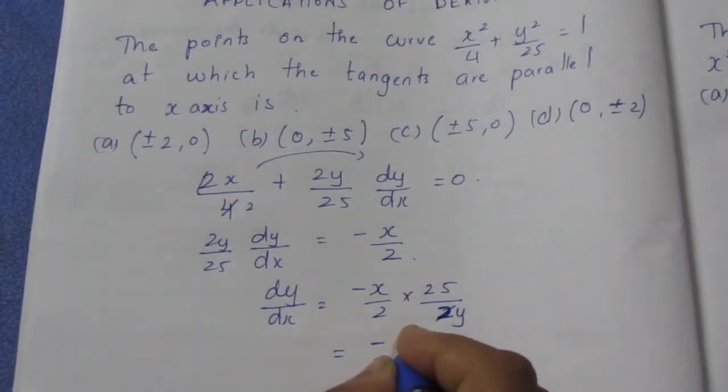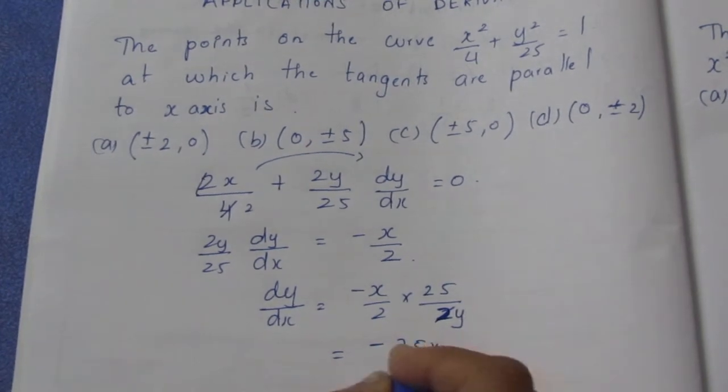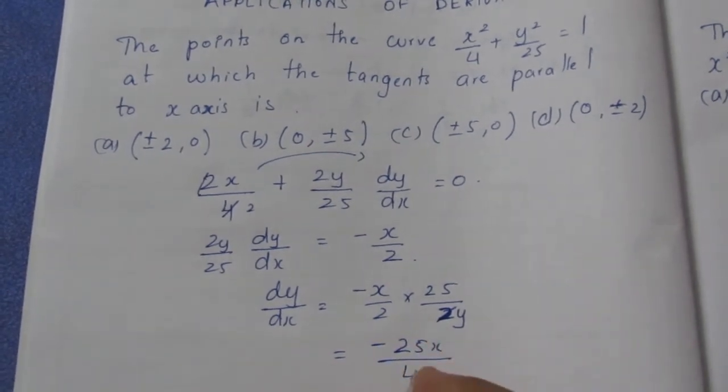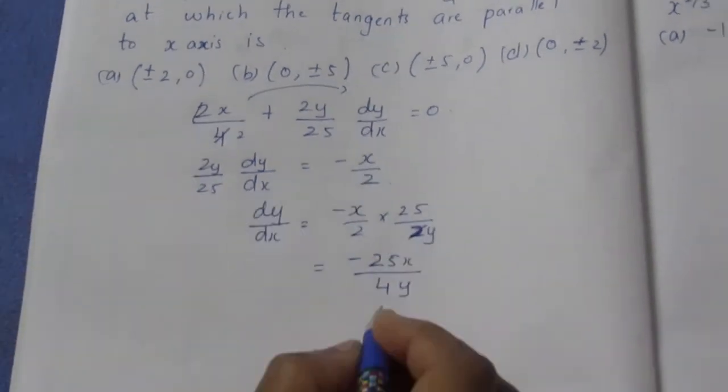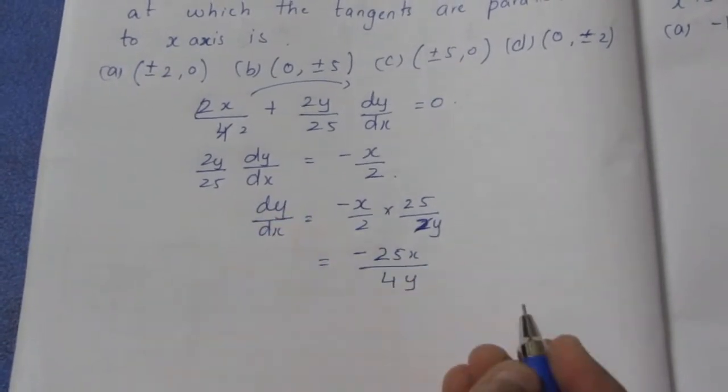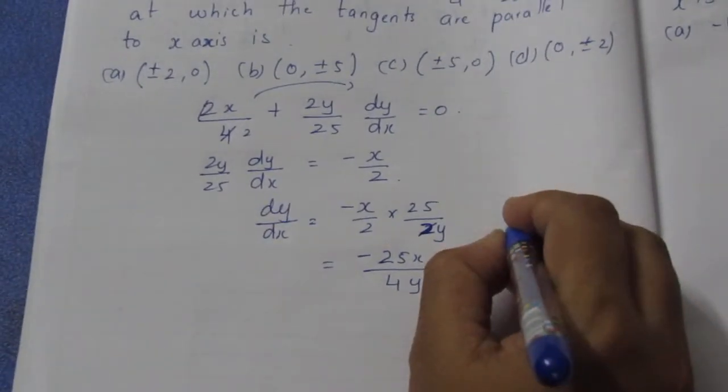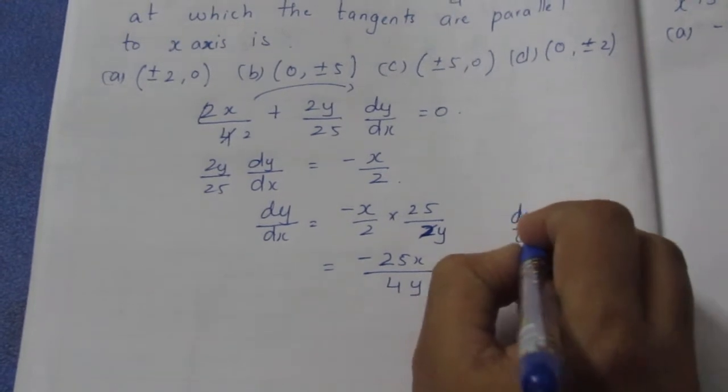So this is nothing but -25x / 4y equal to dy/dx. We know that slope is equal to 0, so dy/dx is equal to 0.